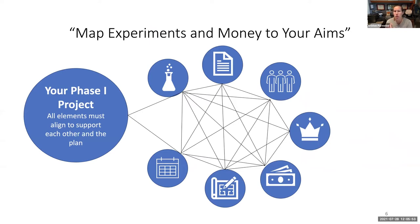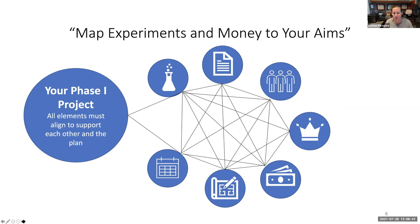There are lots of moving parts and pieces that go into your application, but they should all be driven by your specific aims. All of those things need to align to support each other and the plan. Your team needs to line up with the budget — if you have a team of five people, a reviewer would expect to see five people in your budget. If you're proposing to do experiments in a wet lab that you have to rent, the reviewer would expect to see a line item to rent lab space for those experiments. Your budget should align with what you propose to do.